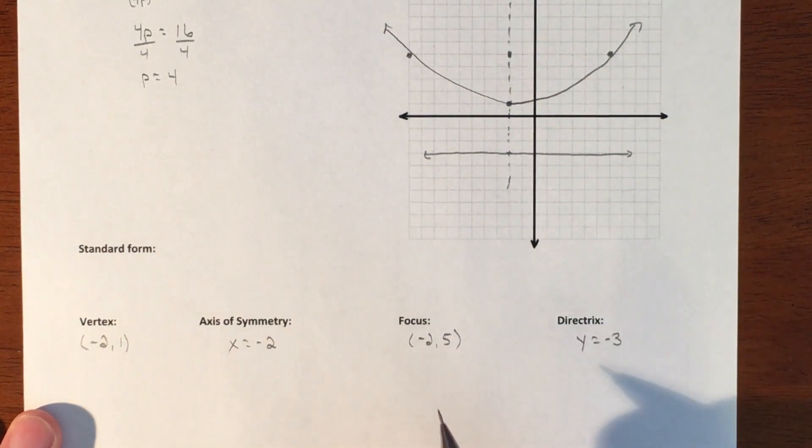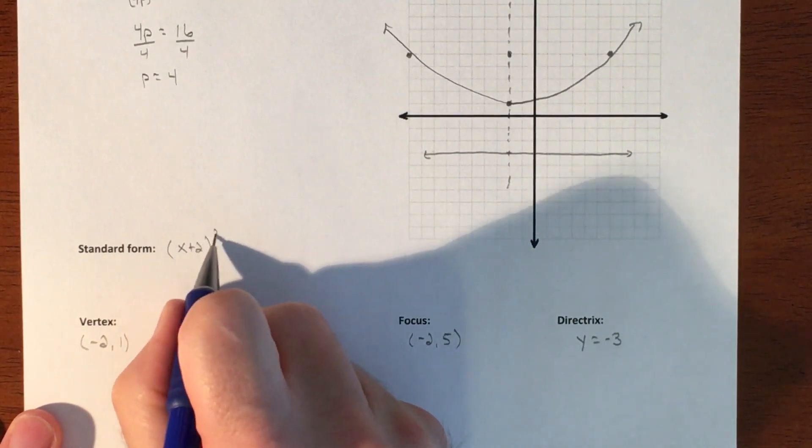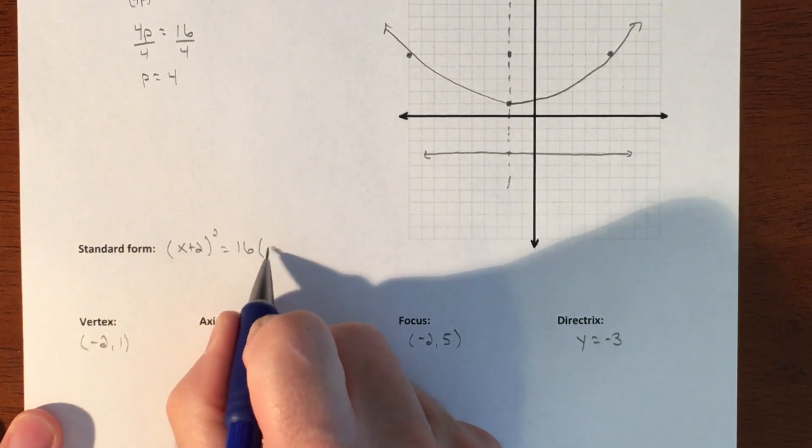And that is our directrix. The standard form, it was already in standard form. We'll just write it. It was already ready to graph. We just have to pull the pieces from it.